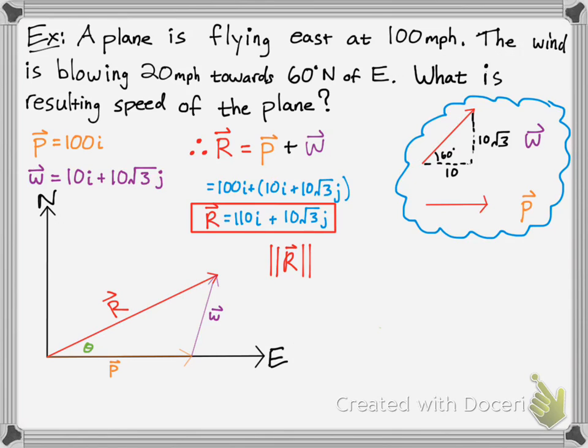If we want to first calculate the magnitude, you simply do the square root of each component after you square each term. So, 110 squared plus 10 radical 3 squared, take the square root, and that's your magnitude. We're flying at 111.3 miles per hour.